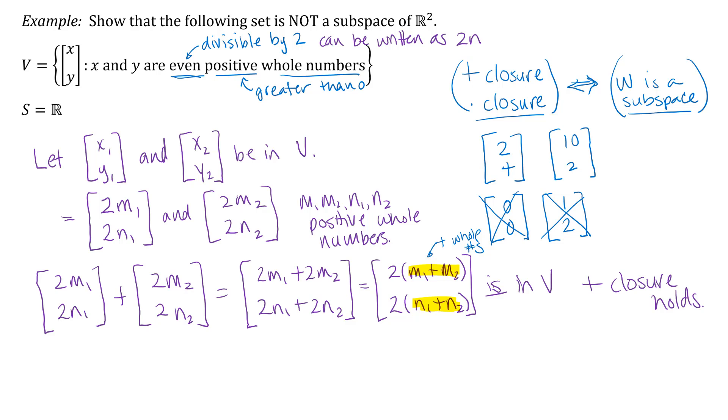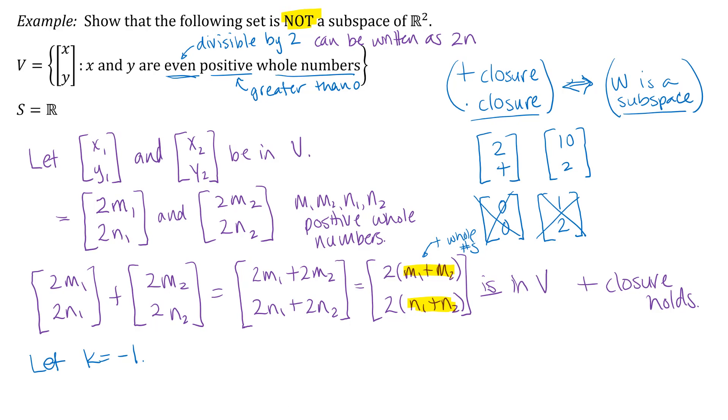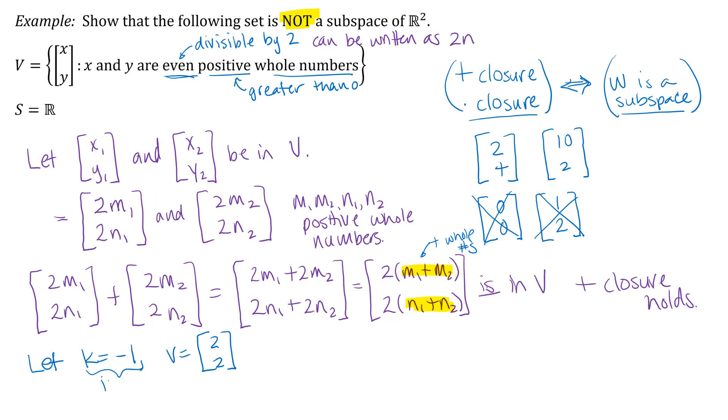All right, so that means that the thing that has to fail is the scalar multiplication closure. Since they told us up here that the set is not a subspace, I know one of those two things has to fail. And there are actually lots of ways to show that something fails. When you're showing something fails, the easiest way to do that is with what's called a counter example. So you're just looking for one example of something that makes it fail. So for example, I can let my scalar be negative one and I could just take any vector in the set, like [2,4] or maybe even more simply [2,2]. Okay, so this scalar is in our set R, and this vector is in the set V, but the product of them is not in the set V because these are not positive even whole numbers. All right, so that tells us that the scalar multiplication closure does not hold.